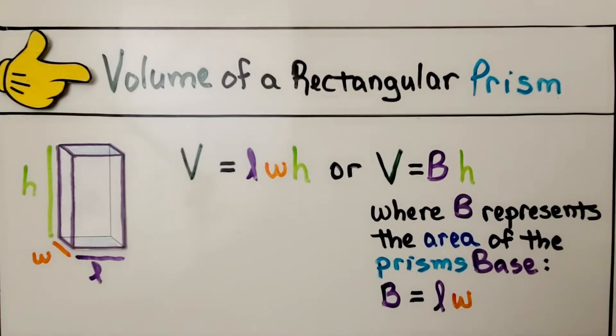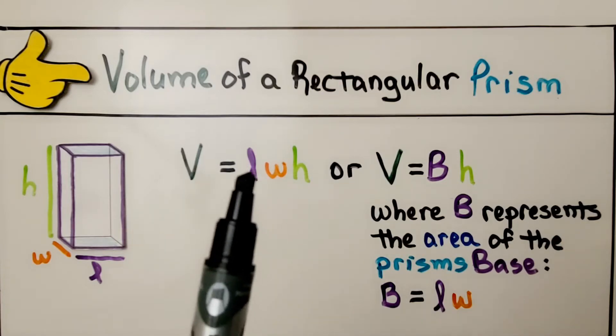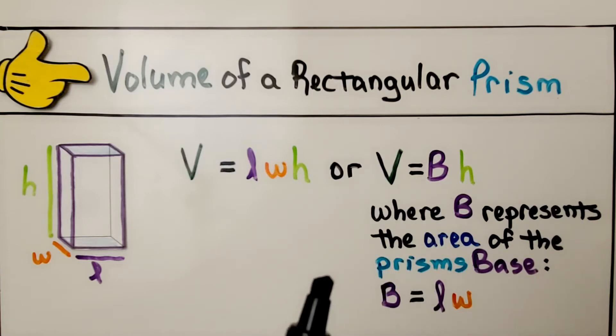We've seen this before, but just to remind you, the volume of a rectangular prism can be found with the formula v is equal to length, width, height. We multiply them, or we could do volume is equal to the base height. The capital B represents the length times the width as an area.